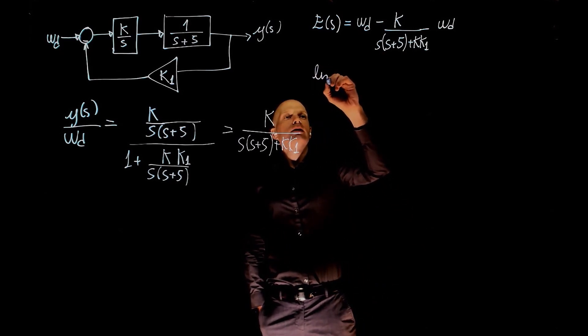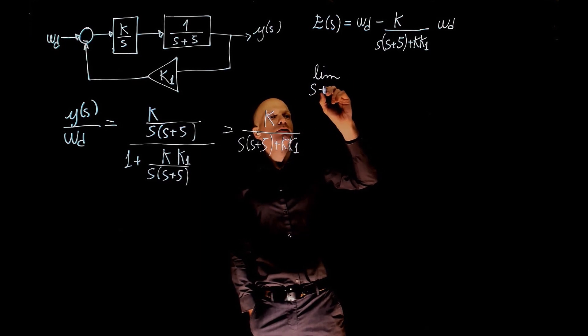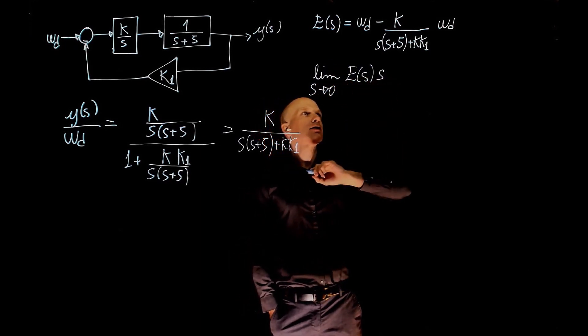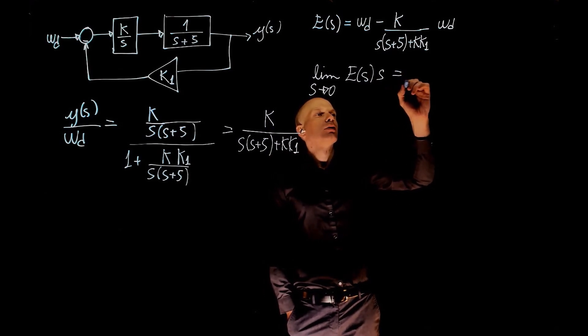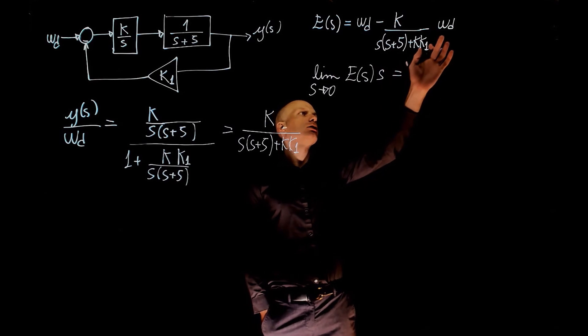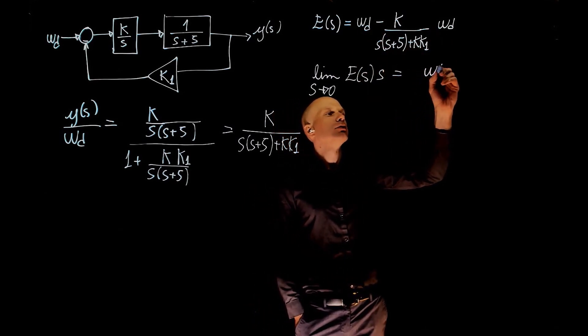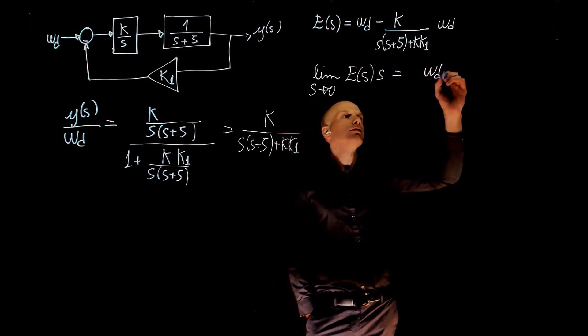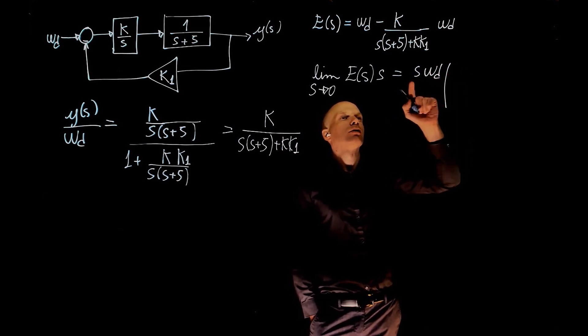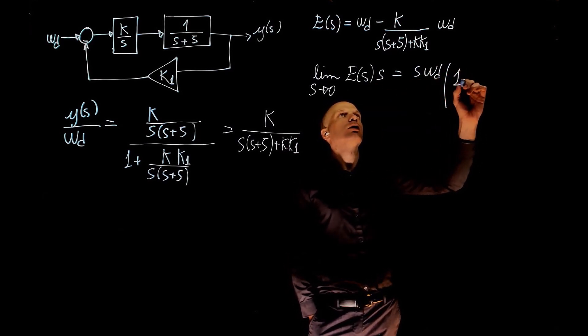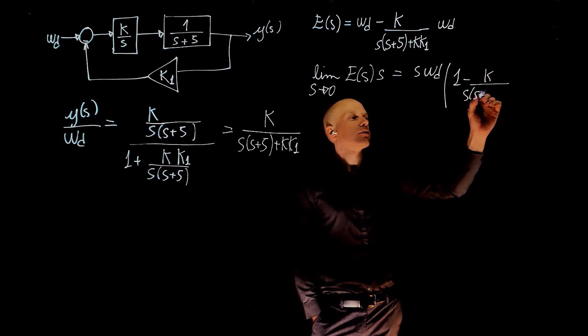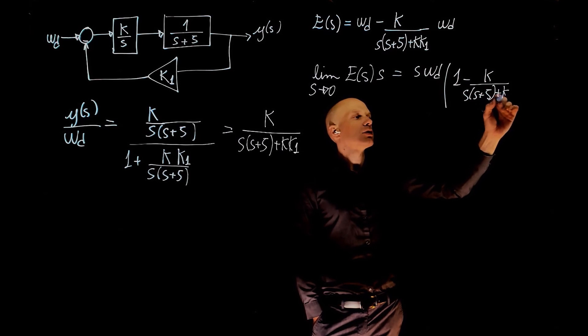And now the steady-state error is the limit when s tends to 0 of e of s times s. That is, e of s is this entire function. Now I'm going to factor omega d, or wd, and you're left with s from here. 1 minus k, s, s plus 5 plus k, k1.